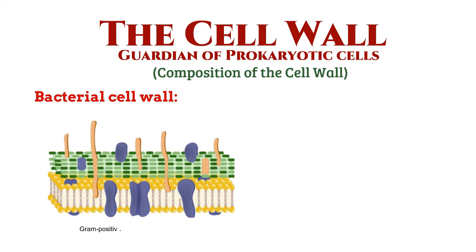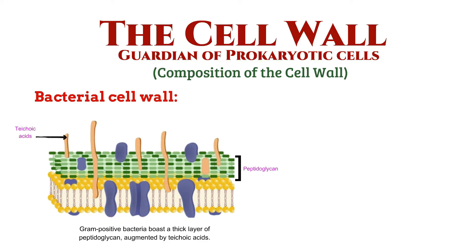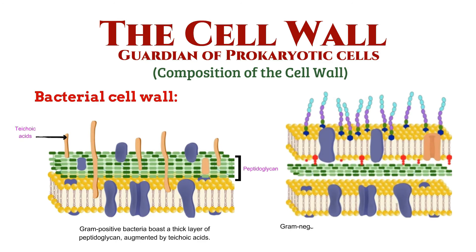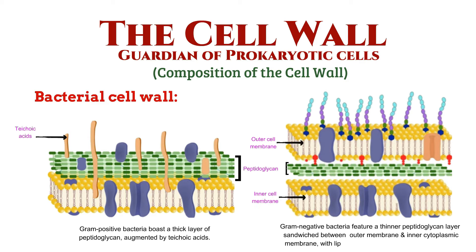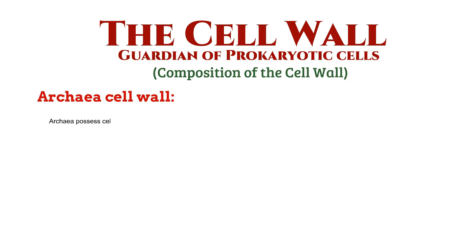Gram-positive bacteria boast a thick layer of peptidoglycan, augmented by teichoic acids. Gram-negative bacteria feature a thinner peptidoglycan layer sandwiched between an outer membrane and an inner cytoplasmic membrane, with lipopolysaccharides playing a crucial role.